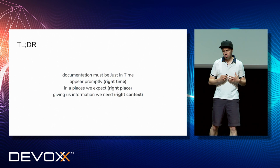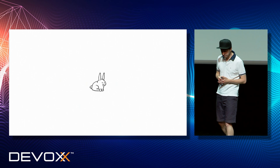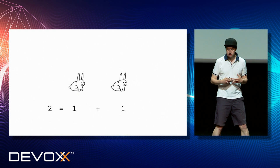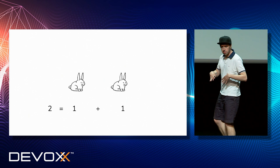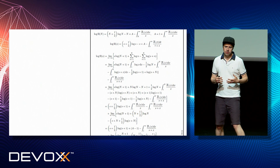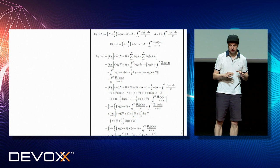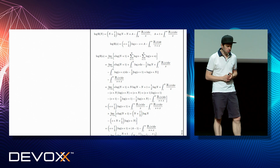Whenever we think about documentation, it reminds me of this example. This is a rabbit — one rabbit. And when you have one more rabbit, you have one plus one equals two. You have two rabbits. And now, based on this very simple premise, we can build on and solve this equation. This is very often how it looks with documentation: we start with a very basic example and then we land in a very complicated world we don't fully follow.